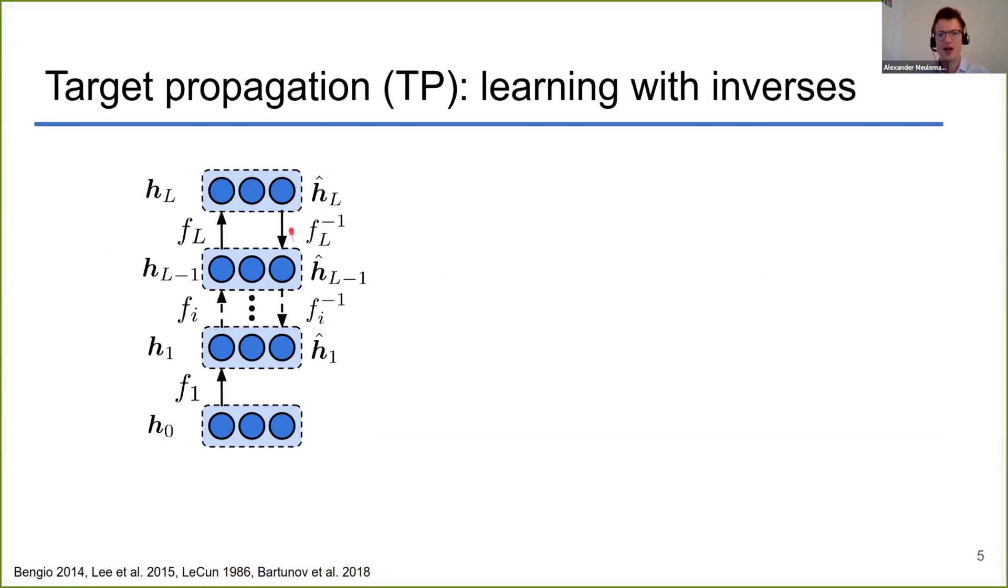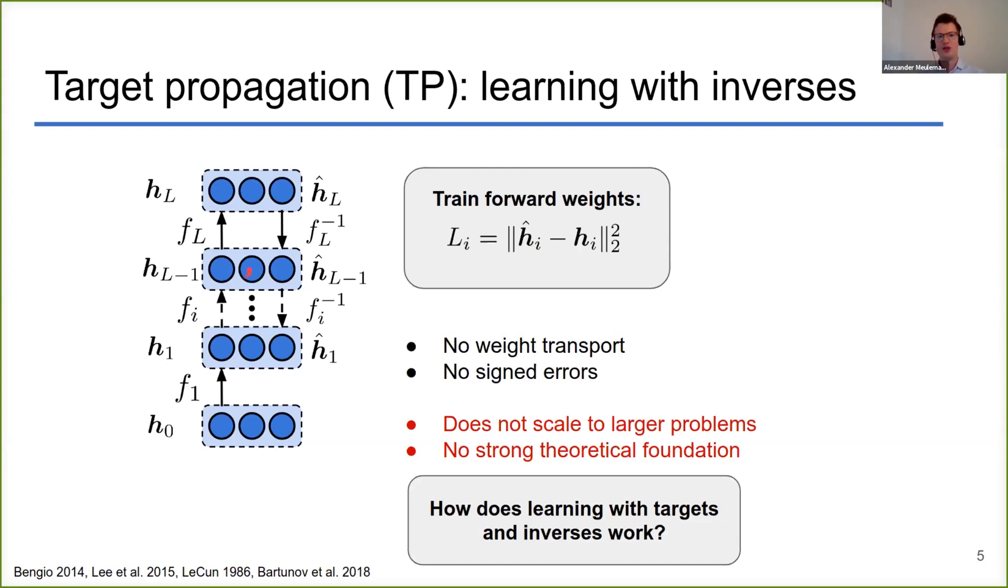You will backpropagate this output target by using inverses of your forward pathway. These inverses will be learned and have their own set of parameters. Now you have all these local layer targets, and then you can update the synapses of each layer by doing a simple gradient descent step on a local L2 loss between the target and the actual activation. This results in a simple delta rule that you all are familiar with, I assume.